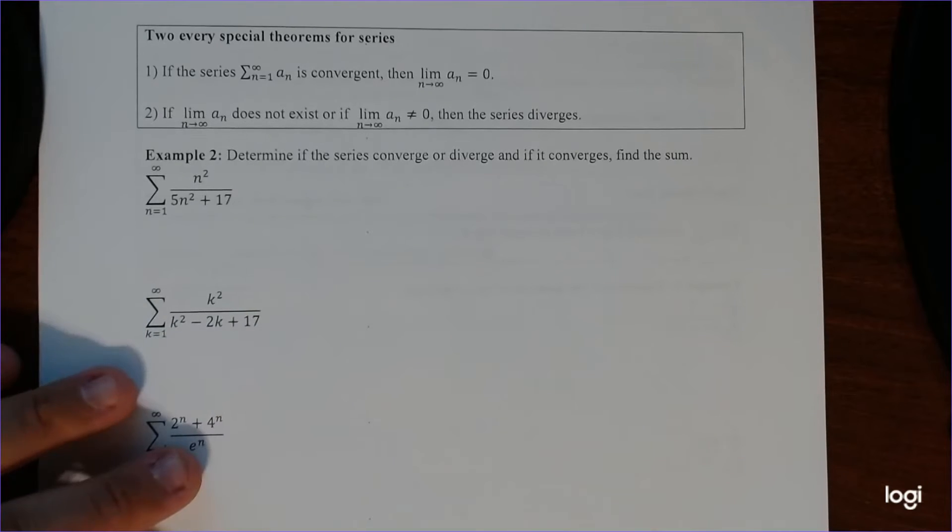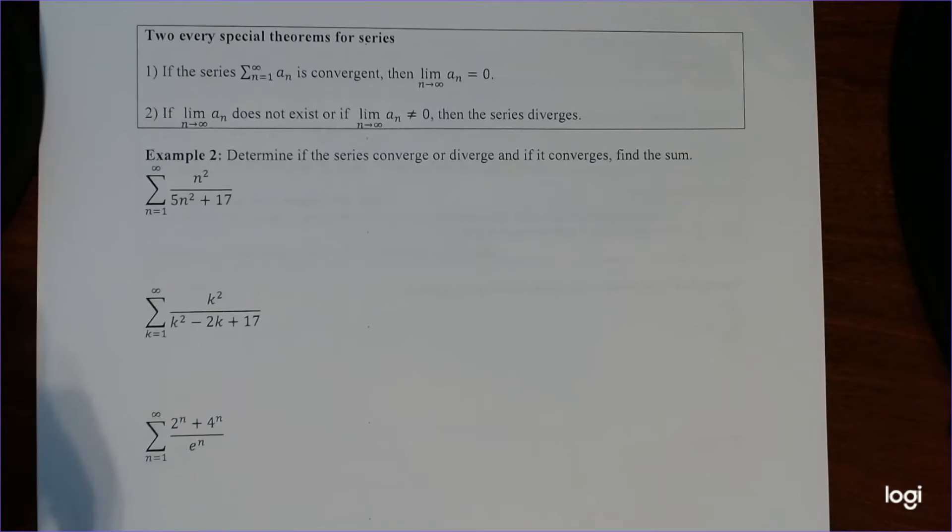So again, the very two special theorems involved is if the series of n equals 1 to infinity of A sub n converges, therefore, the limit as A sub n equals 0. So this is a key thing: if you know this series converges, therefore the limit of this sequence automatically equals 0, which is pretty powerful because, again, if you want to find the actual value it goes to, as long as you know this converges, you automatically know that.